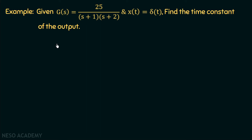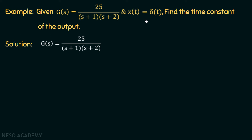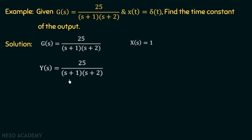Moving on to the solution, we are given G(S) equal to 25 over (s+1)(s+2) and the input x(t) equal to δ(t). If we take the Laplace transform of this input, we will have X(S) equal to 1, because the Laplace transform of the impulse function is equal to 1. Now we will first find out the output: Y(S) equals 25 over (s+1) multiplied with (s+2).